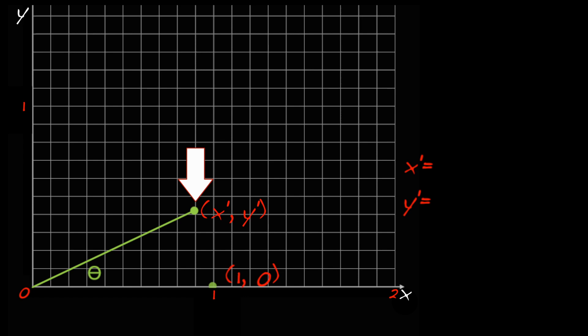To determine formulas for x' and y' in this case, drop a perpendicular from (x', y') to the x-axis. The orange length is x', and the magenta length is y'. Notice that the orange, magenta, and green triangle is a right triangle.